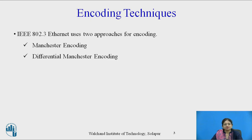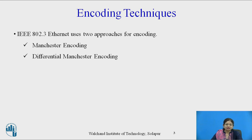The next very important topic is encoding technique. IEEE 802.3 Ethernet uses two approaches for encoding: Manchester encoding and differential Manchester encoding. When data comes from the upper layer to the physical layer, the physical layer is responsible for transmitting data bits in the form of signals, converting data bits into digital signals. It converts those bits into different bits using various encoding techniques.